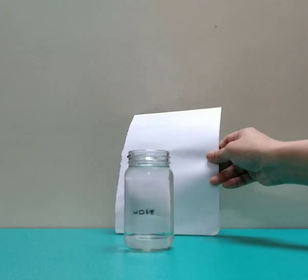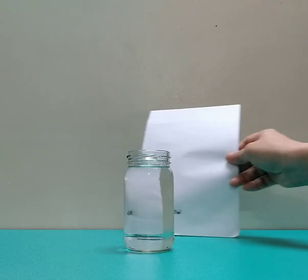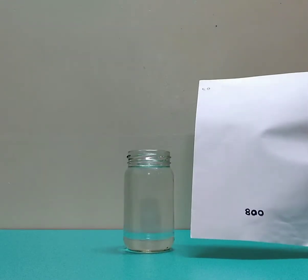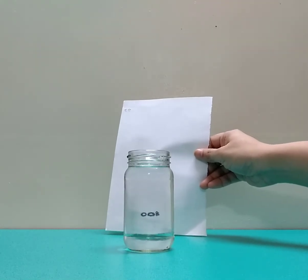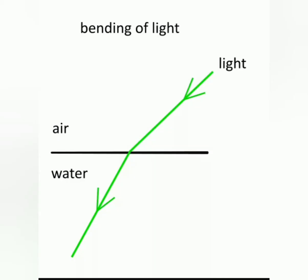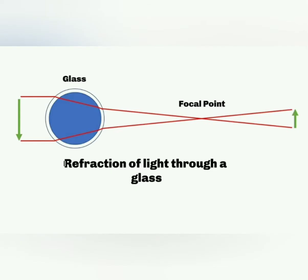Now we will see what exactly is going on. This happens because of refraction. Refraction is the bending of light as it passes from one transparent medium into another. When light travels through a cylindrical glass, it bends when entering the glass and water, and then it again bends when leaving the water and glass.